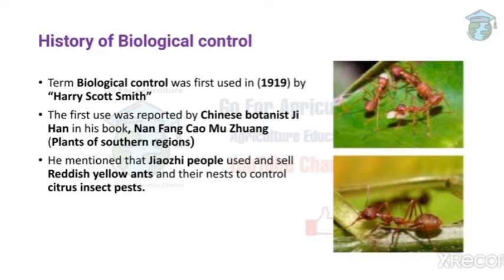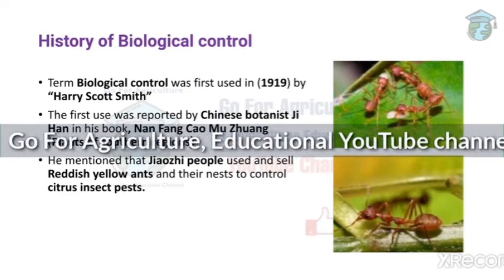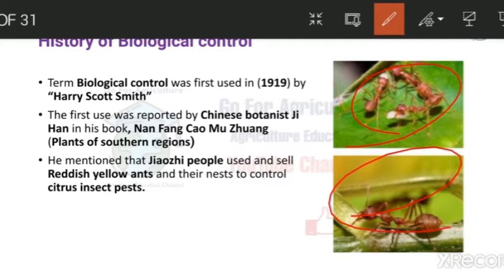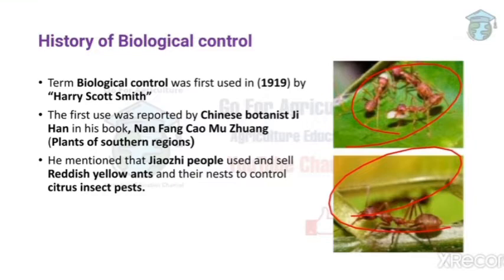Next is the history of biological control. Harry Scott Smith, a scientist, first used the term 'biological control' in 1919. A Chinese botanist named Ji Han mentioned the first use of biological control in his book 'Nanfang Caomu Zhuang' (Plants of Southern Regions). He recorded that the people of Jiao Ji used reddish-yellow ants to control citrus pests. This was the first recorded use of biological control. Key terms: Harry Scott Smith, Ji Han, reddish-yellow ants — important for competitive exams.